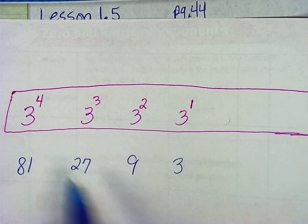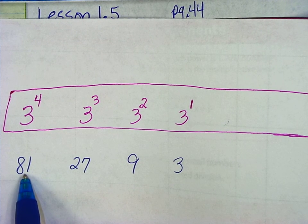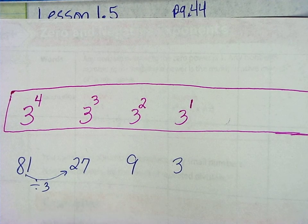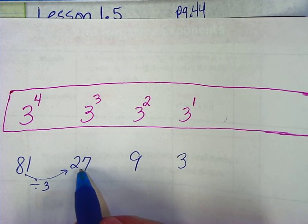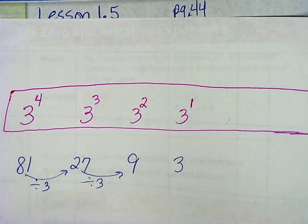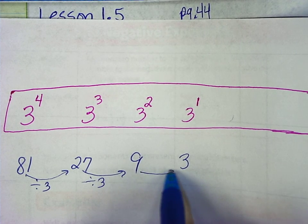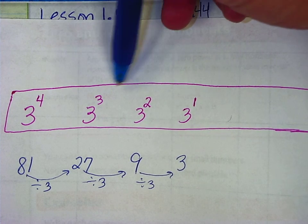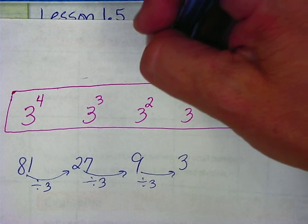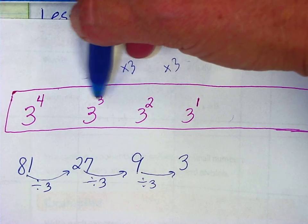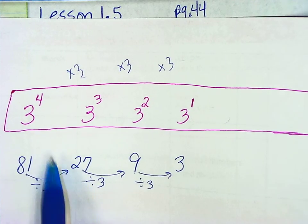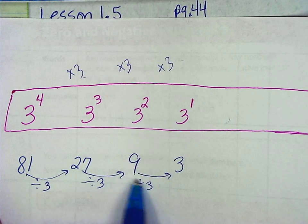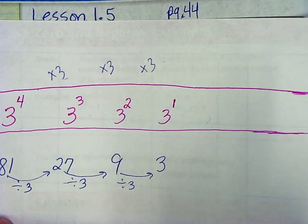Let's look at what's happening with these values. We went from 81 to 27, so we actually divided by the base number, 3. From 27 to 9, we divided by 3 again. And from 9 to 3, we divided by 3. So when ascending in exponent value, you're multiplying by one more 3 each time your exponent increases by 1. But when exponents are going down, you're dividing by 3. So let's say we have 3 to the 0 — that would be the next pattern.